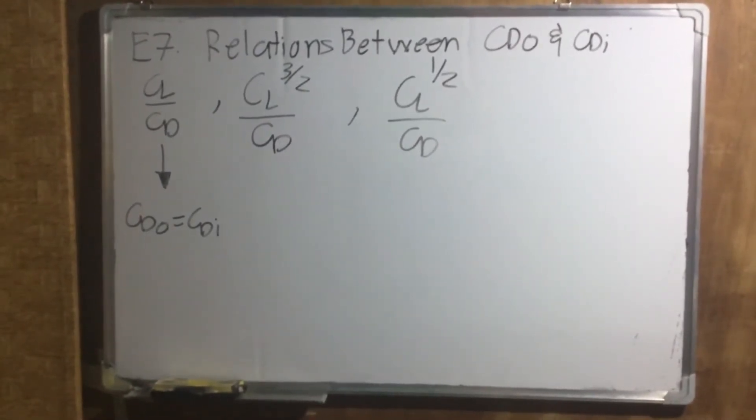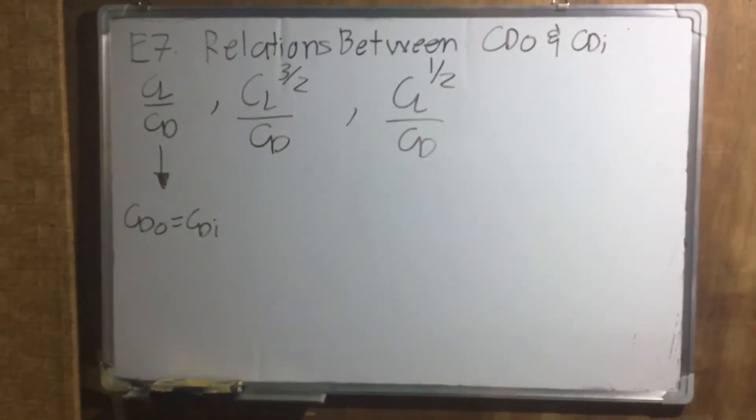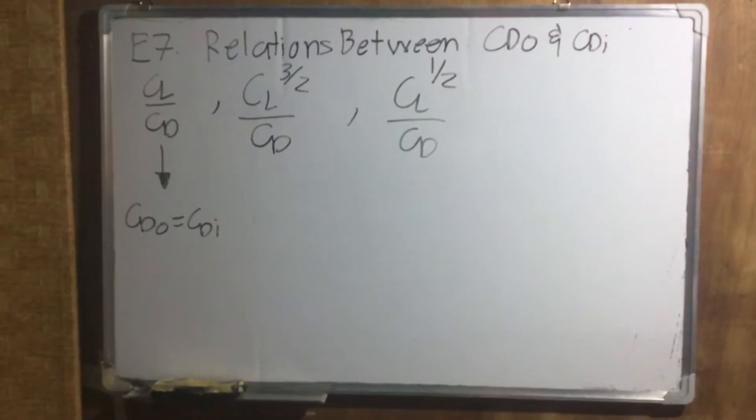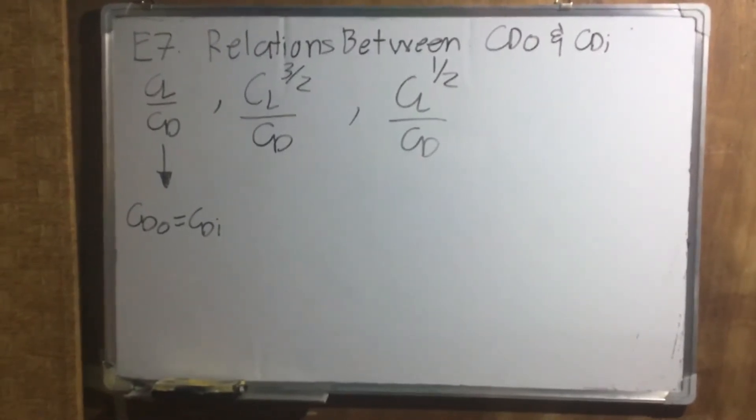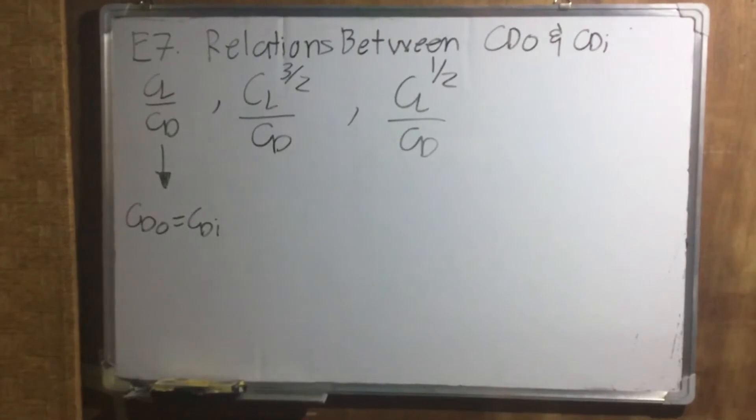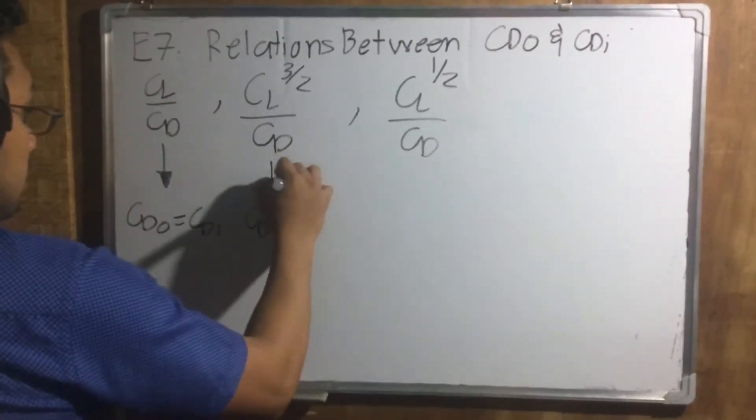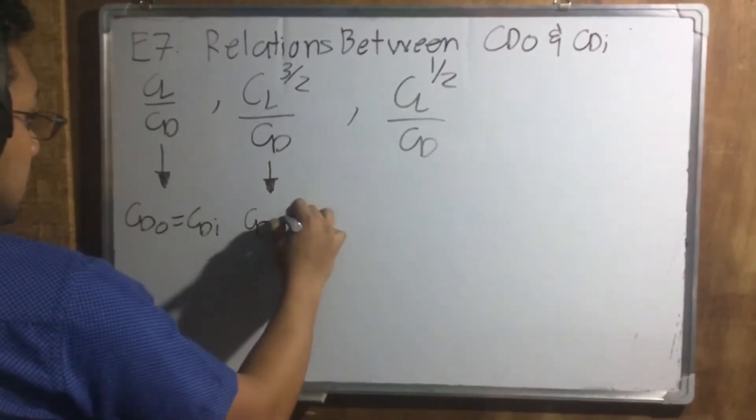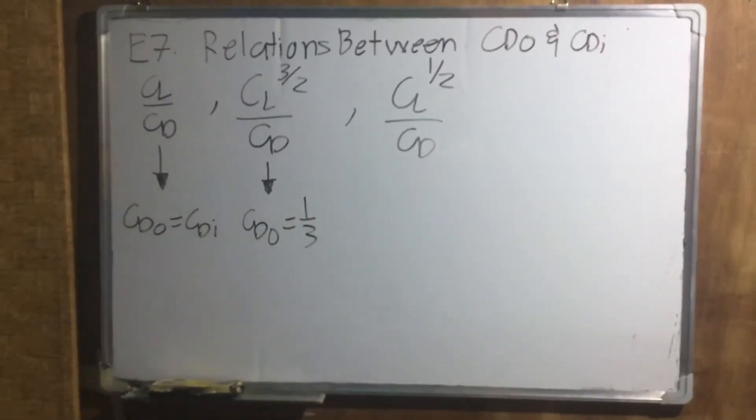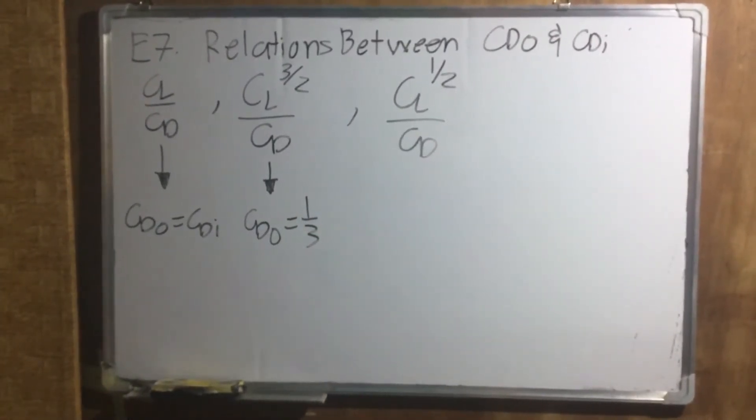We've also seen this part. When we maximize CL three halves over CD, we can get the minimum power required of the aircraft. And what happens when CL three halves over CD? What happens there is CDO is equals to one third of CDI.